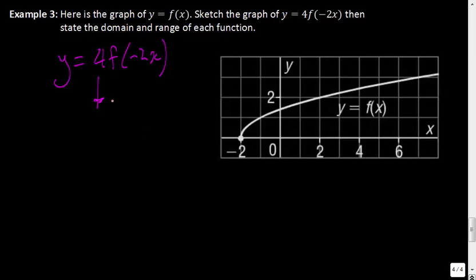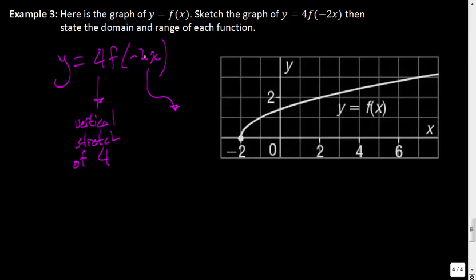Let me write down the function one more time to break this up clearly: y = 4f(−2x). The 4 value is going to produce a vertical stretch of factor 4 — we don't need to take the reciprocal of that. In the horizontal direction, we have a value of negative 2. Since that is less than negative 1, we know it's going to be a horizontal compression.